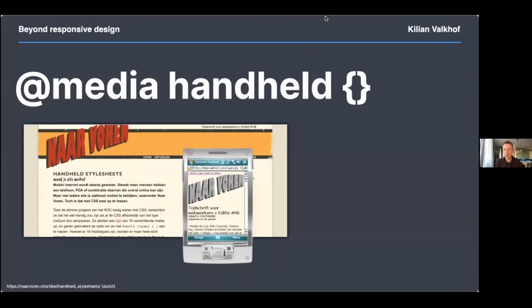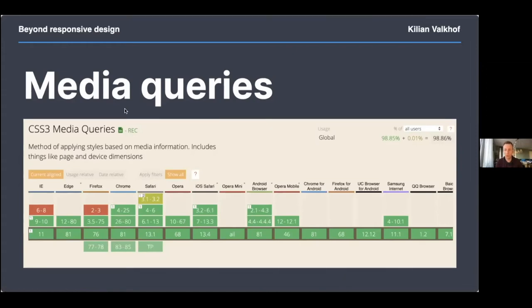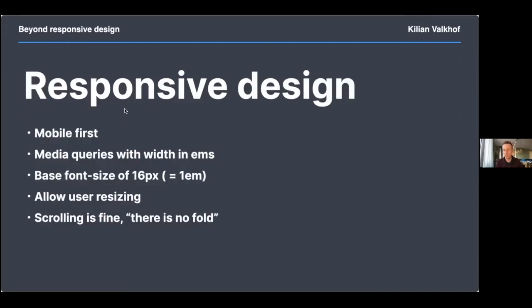Now media queries are supported everywhere, and we just take that for granted. So as we do on the web, now that something works very well everywhere, we move on to things that don't work well everywhere yet. Going over responsive design in code: you want to do mobile first, use media queries with ems rather than pixels so it sizes nicely as users zoom, and use a base font size of 16 pixels — not 10, not 12, not 14 — which is what browsers have always done.